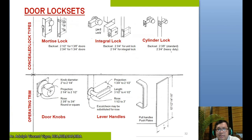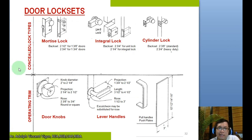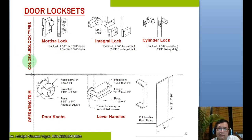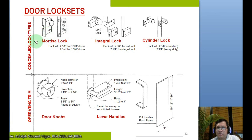For concealed lock types, the mortise lock is one of the most secure types because it is concealed — it would be hard to break through, especially when used in wood panel doors. Other concealed lock types include the integral lock and the cylinder lock.